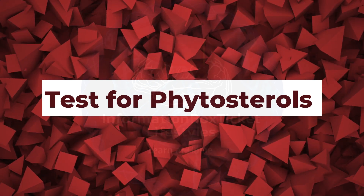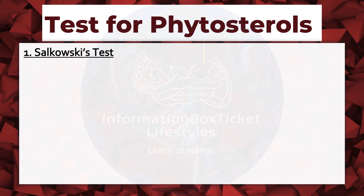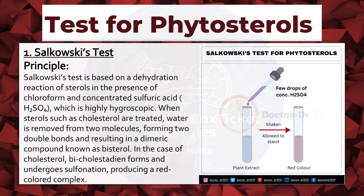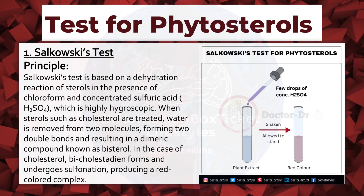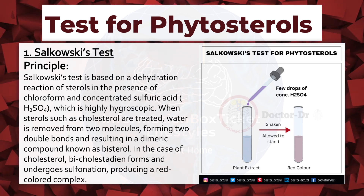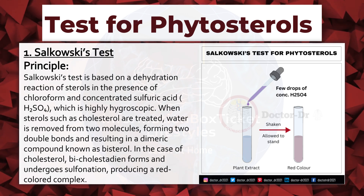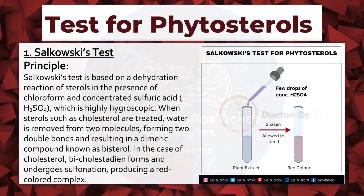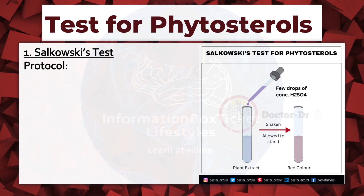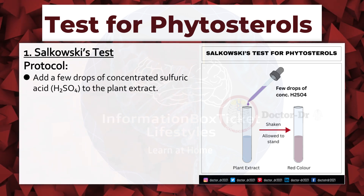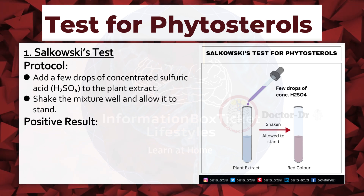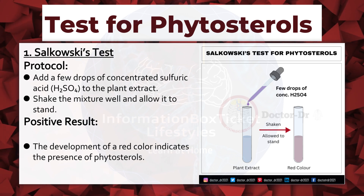Test for Phytosterols. Salkowski's Test. Principle: Salkowski's test is based on a dehydration reaction of sterols in the presence of chloroform and concentrated sulfuric acid, which is highly hygroscopic. When sterols such as cholesterol are treated, water is removed from two molecules, forming two double bonds and resulting in a dimeric compound. In the case of cholesterol, bicholestadiene forms and undergoes sulfonation, producing a red-colored complex. Protocol: add a few drops of concentrated sulfuric acid to the plant extract, shake well, and allow it to stand. Positive result: development of a red color indicates the presence of phytosterols.